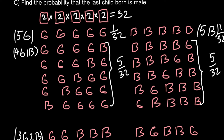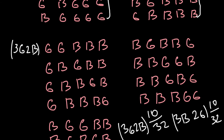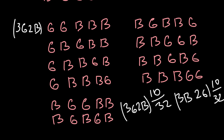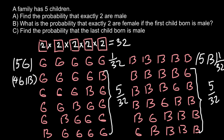The question asked for the probability that exactly two are male, meaning three girls and two boys. The answer to Question A is 10 out of 32.